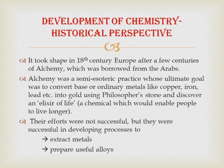The alchemists tried hard to convert ordinary metals into gold and to discover the elixir of life, but their efforts were not very successful. However, they were successful in developing processes to extract metals — while continuously working, they could extract metals even though they could not make gold or find the elixir of life.